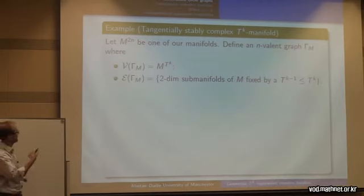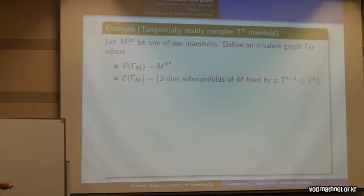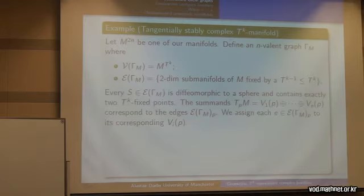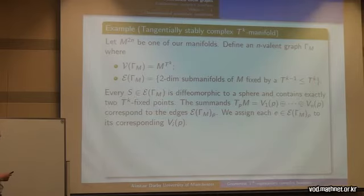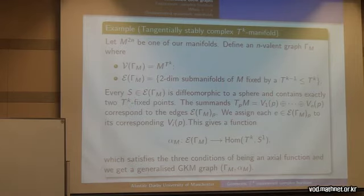The obvious example is that from a tangentially stably complex torus manifold with isolated fixed points and the GKM condition, we can define one of these graphs: we set the vertices to be the isolated fixed points and the edges to be these embedded two-spheres fixed by a codimension-1 torus action. Each one of these spheres contains exactly two fixed points and we can write the tangential representation as a sum of irreducible representations corresponding to the edges emanating out from P. This gives us the axial function by assigning to each edge the corresponding weight vector of the representation.